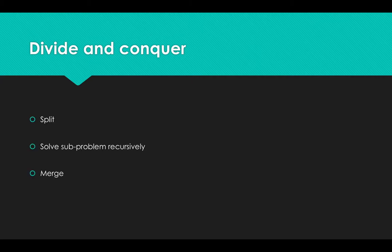For divide and conquer techniques, there are three phases. The first is split: for big problem, split into sub-problems. And the second phase is solve sub-problems recursively. And the third stage is to merge them together.